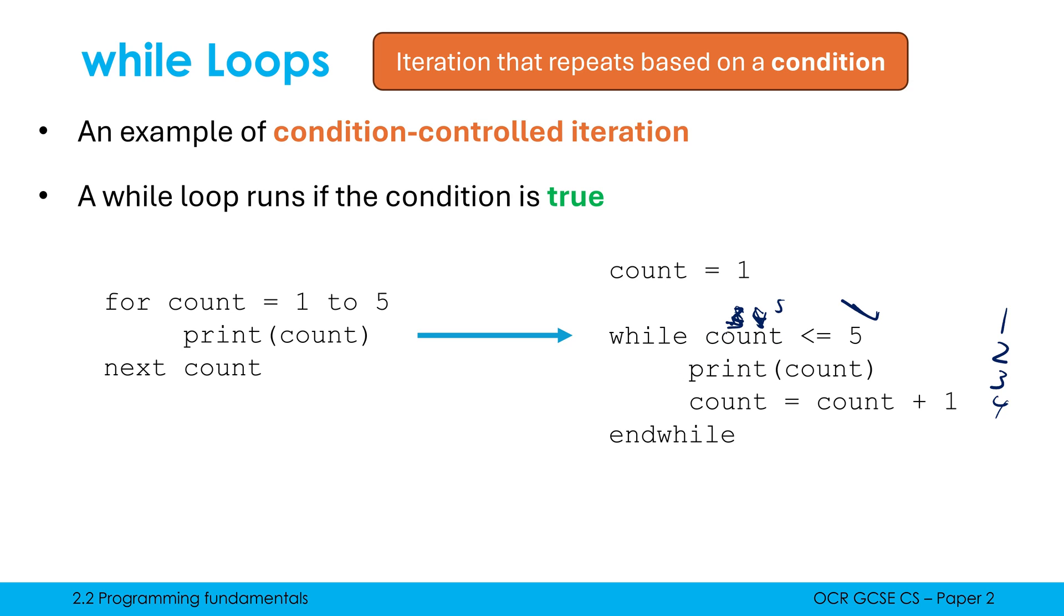Well, five is still less than or equal to five because of this equal sign. Therefore, I print count again. And now count is equal to count plus one. So count is now six. But now six is not less than or equal to five. Therefore, this is false. Therefore, our while loop ends. So do try and visualize in your head that it is going back on itself. Every time it is checking our condition after every iteration to see if it eventually becomes false.